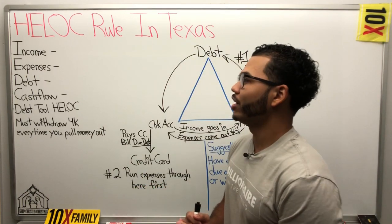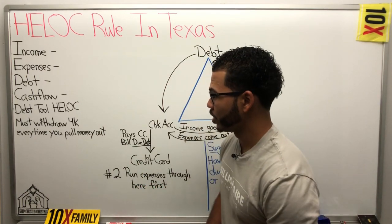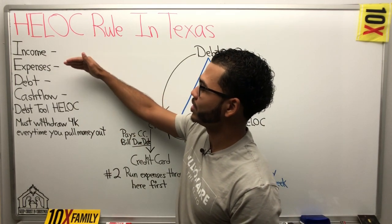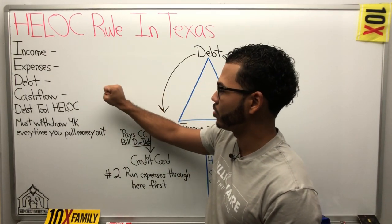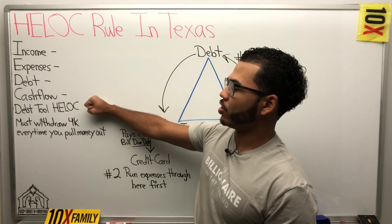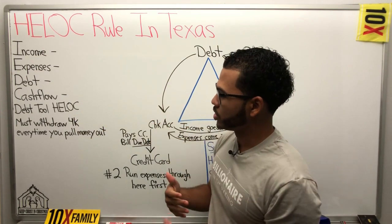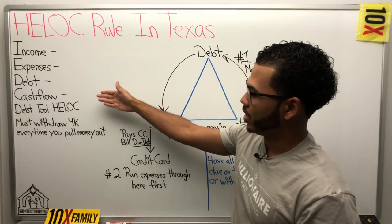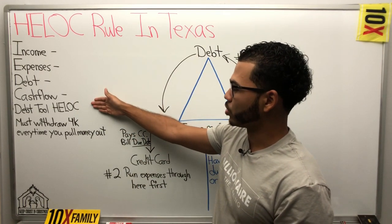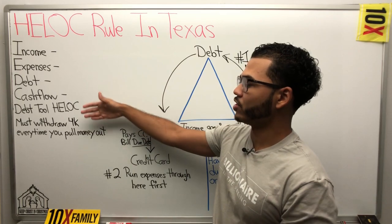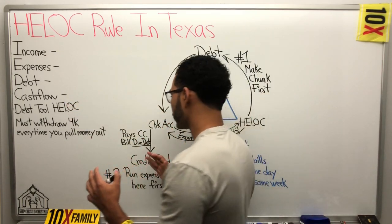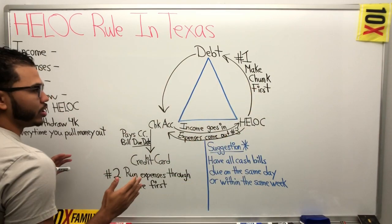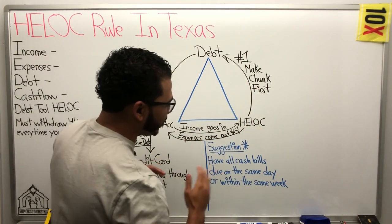If you are in that situation, first things first, let's get your numbers — your income, expense, debt, cash flow. Once we get that down, we already have our debt tool. And in this scenario, you're the one that has a home equity line of credit and you have to withdraw $4K every single time you pull out money. Here's how we're going to work with this.